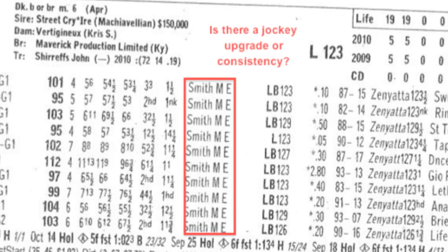Once we've determined that our horse is running at the right level and belongs there, and at the right distance, we want to look at the jockey. There are two things you want to see: either A, you want to see the same jockey who's been riding the horse regularly — that's always a good sign — or two, we have an upgrade in jockeys.